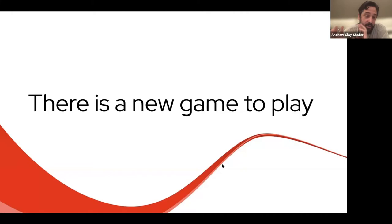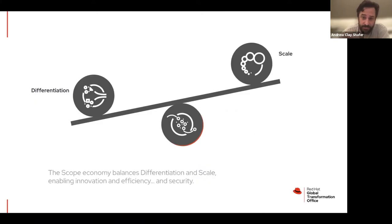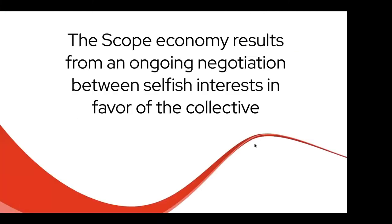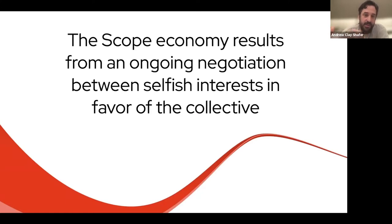Can we win all these games together? I'm going to argue we can, and that there's a new way to play. The new way to play is very much related to these communities we're talking about with the CNCF. The new game — also from Jay's research — is what he calls the scope economy. The scope economy emerges as a game where you can balance the needs of the differentiation and scale economies to enable innovation, efficiency. I'm going to argue you can also use this to enable security. This scope economy results from an ongoing negotiation between all of these selfish interests in favor of the collective interest.